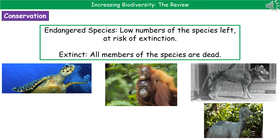I've given you two examples at the bottom there in the pictures. On the left hand side, you can see the hawksbill turtle and in the middle we have the orangutan. The other key term we need to know is the word extinct. When we refer to a species as being extinct, it means that all members of that species are now dead.